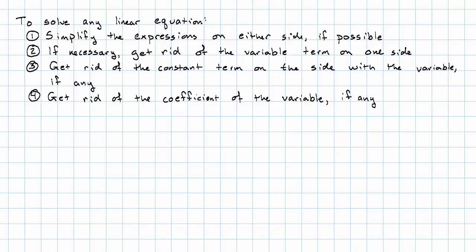So let's see an example where all of these steps are required. Let's suppose that we want to solve this equation: 4 times (x minus 1), minus 8, equals 6 times (3x minus 2), minus 7. Our first step is to simplify the expressions on either side.